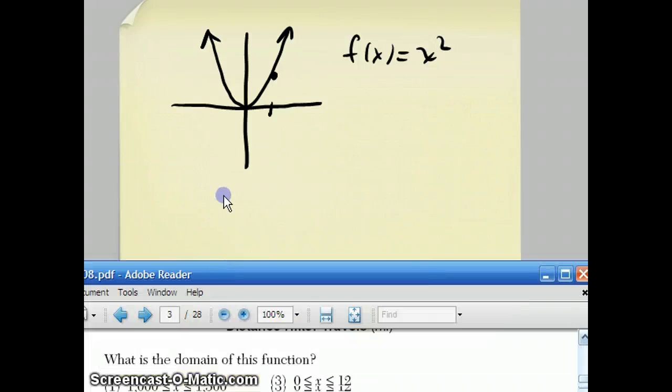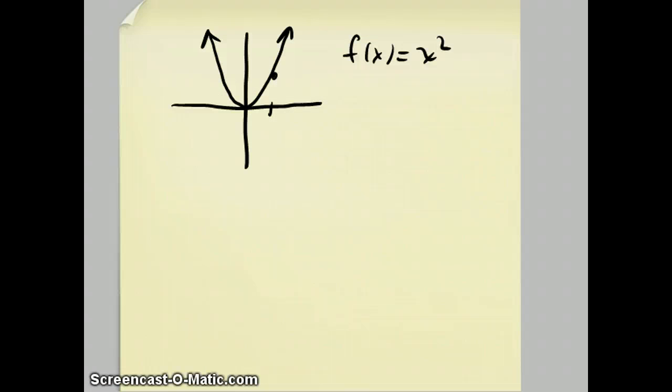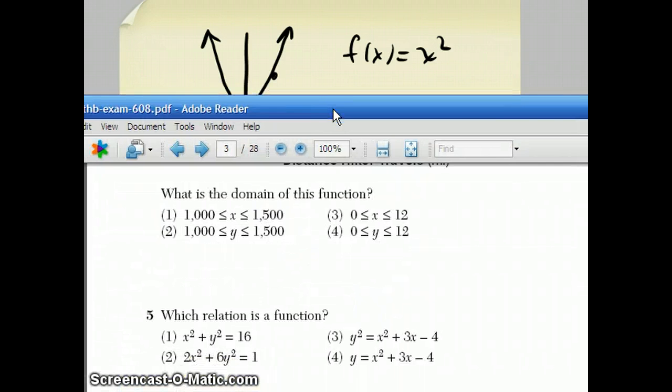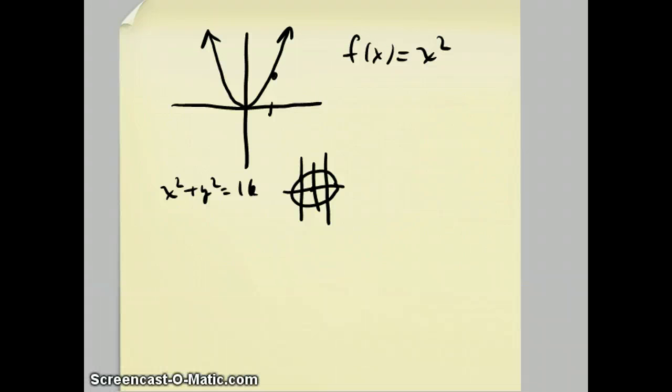Now let's look at the choices they have here. x^2 + y^2 = 16. The graph of that is a circle with center (0, 0) and radius 4. As you can see, there are a lot of places where it would fail the vertical line test. So that one is not a function. Choice two, 2x^2 + 6y^2 = 1. Well, what you need to know about this one is if there are coefficients here and they're different, the graph of this thing is going to be an ellipse. And any ellipse is going to be similar to the way a circle is. It's going to fail the vertical line test.